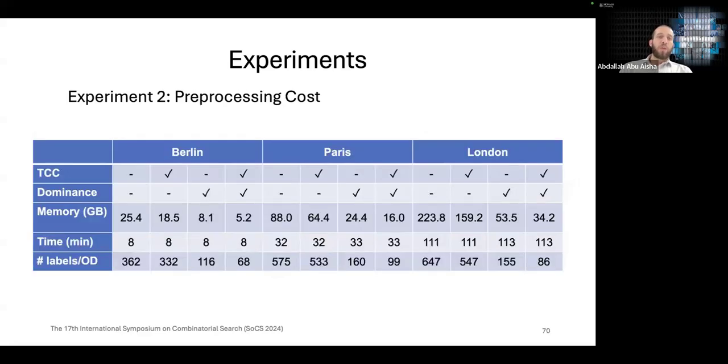For the second experiment, we report some memory or size consumption for the oracle across the different combination optimizations. We can see that the full optimized version can reduce the space by 75 to 80 percent, interestingly, with negligible time overhead.